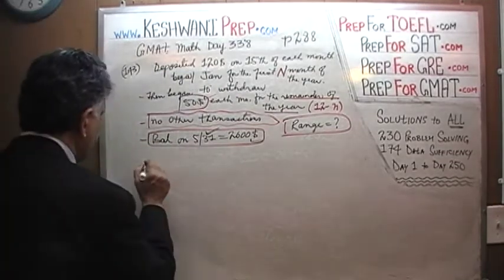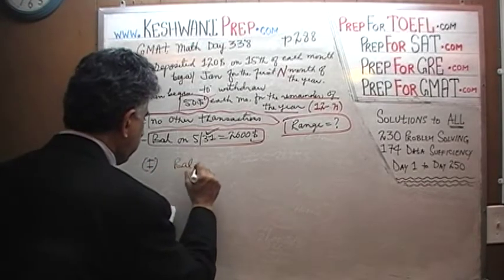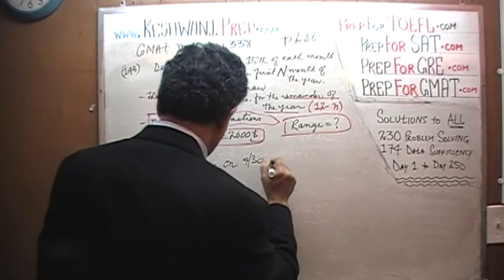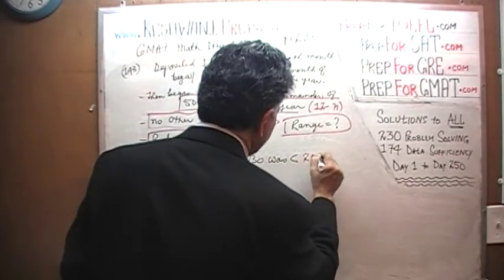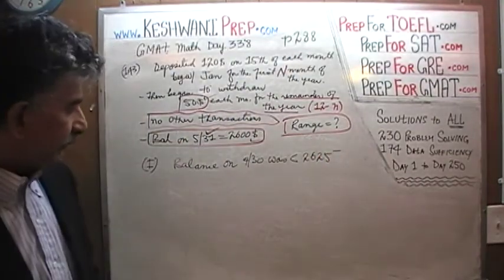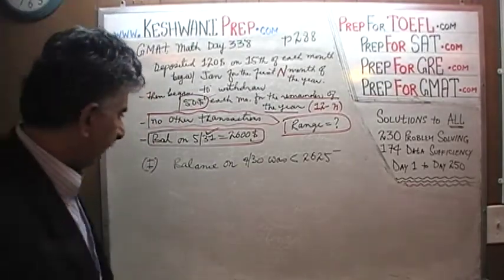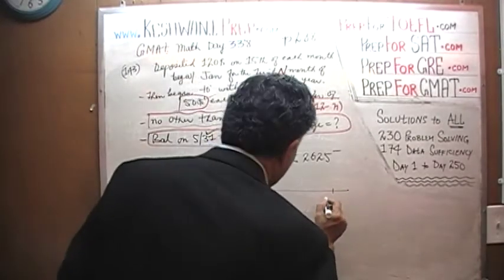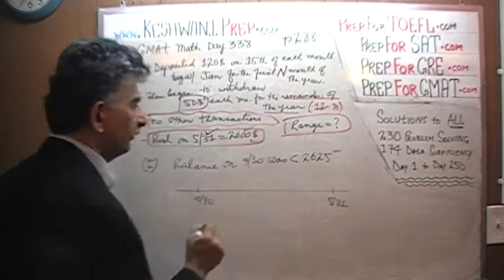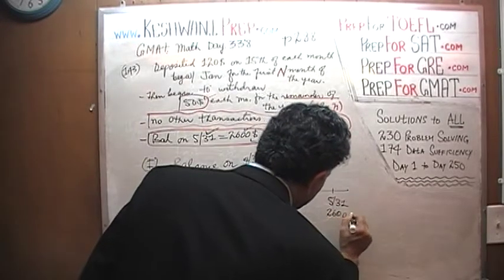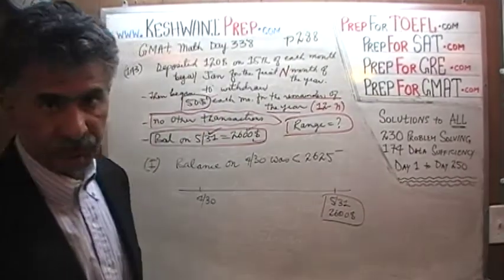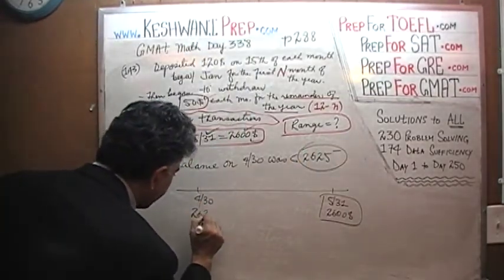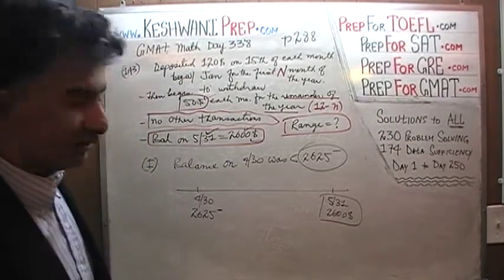In the first statement, we are told that the balance on April 30th was less than $2,625. Here is our April 30th, and here is our May 31st. We know on May 31st we have $2,600 — that is given to us, we put a box around it. On April 30th, all we are told is that it is less than $2,625. We are not told exactly how much.